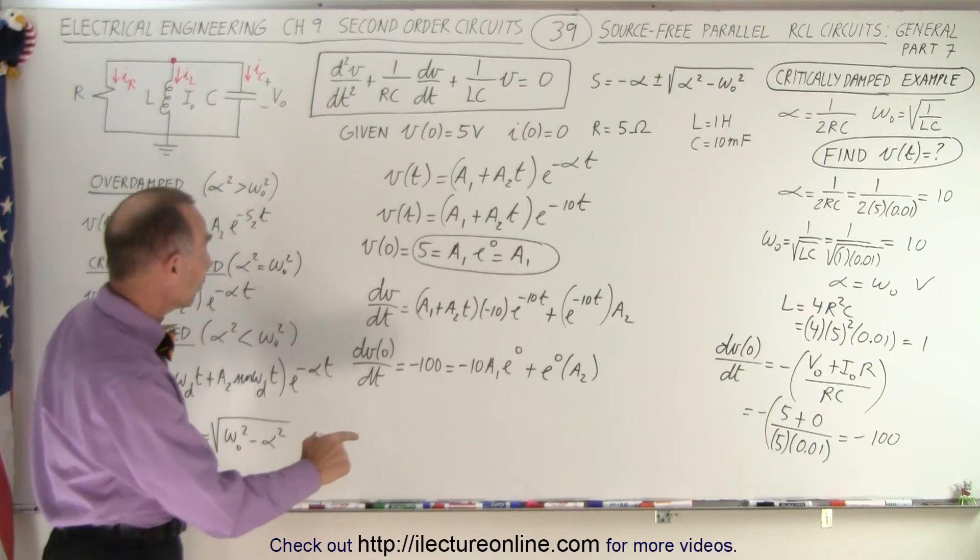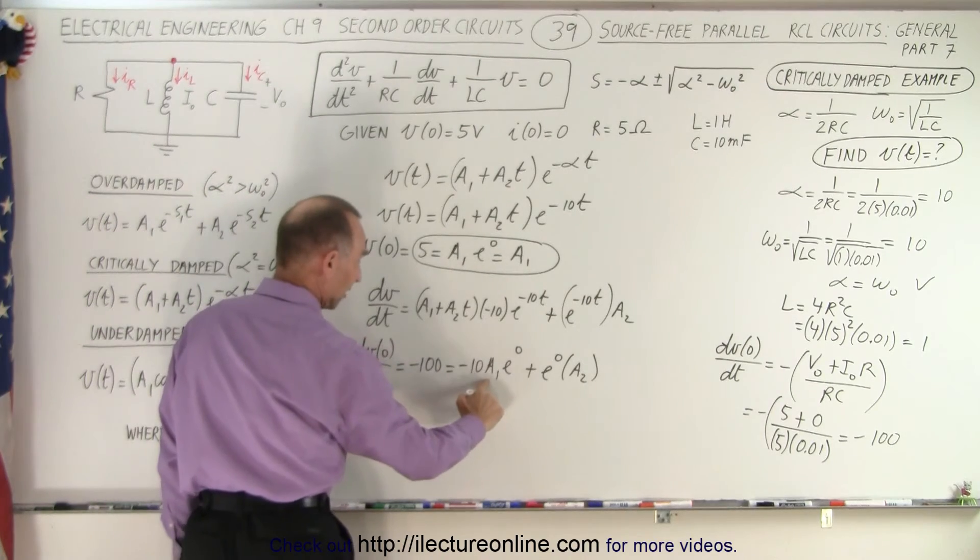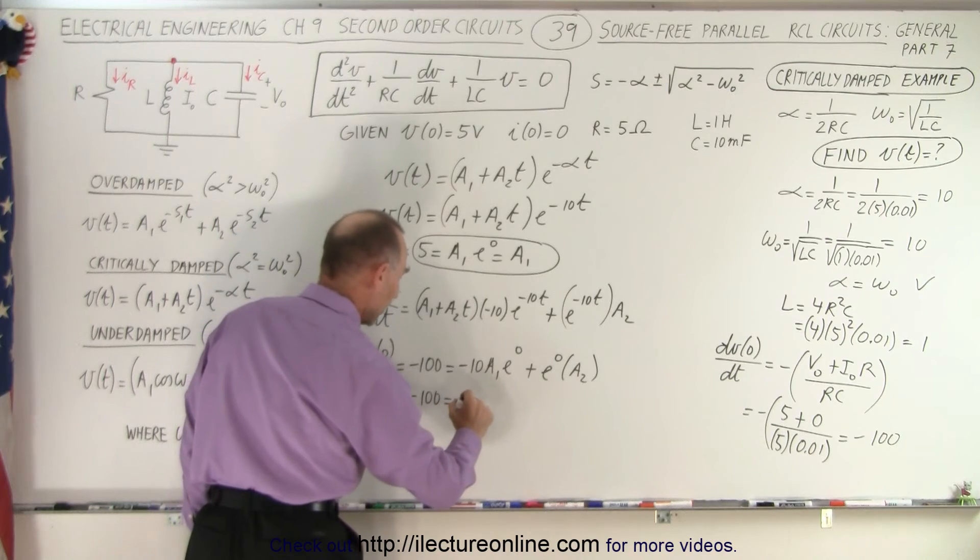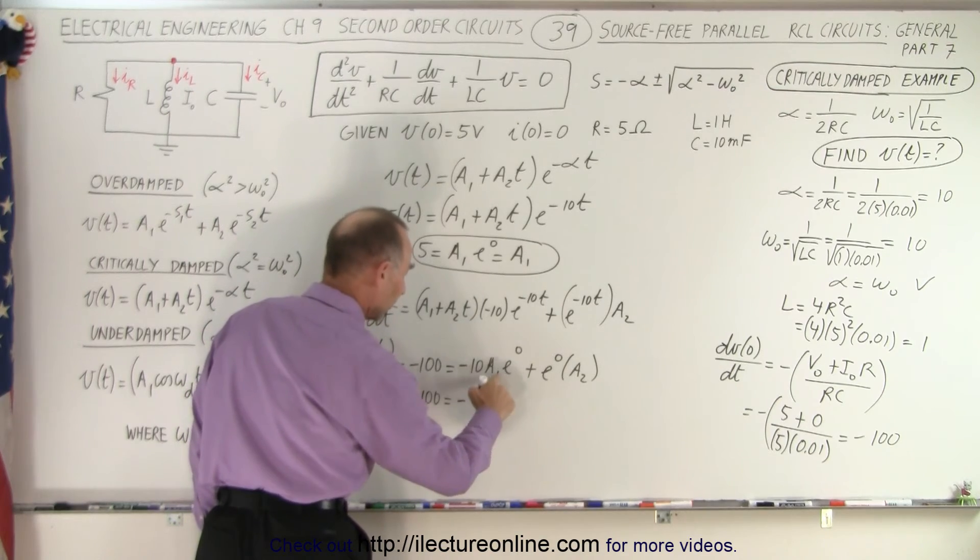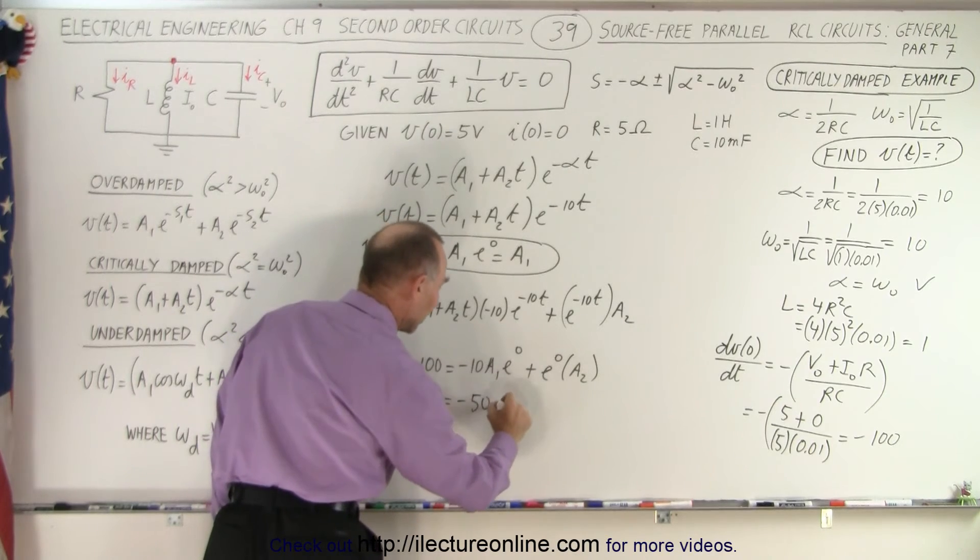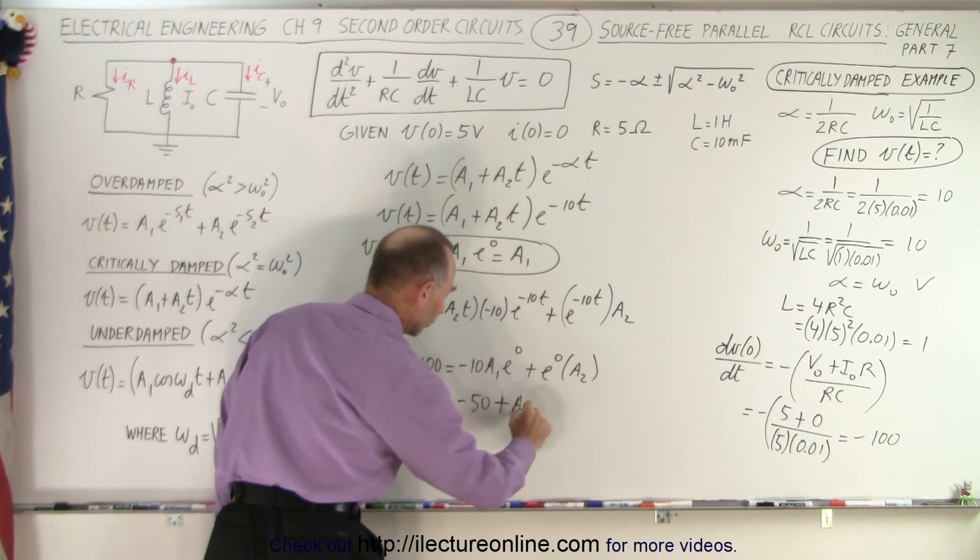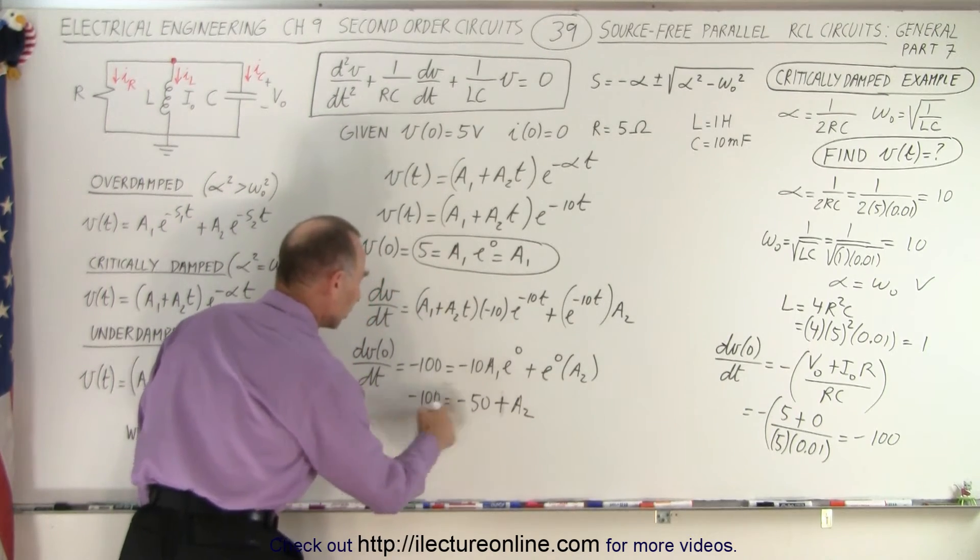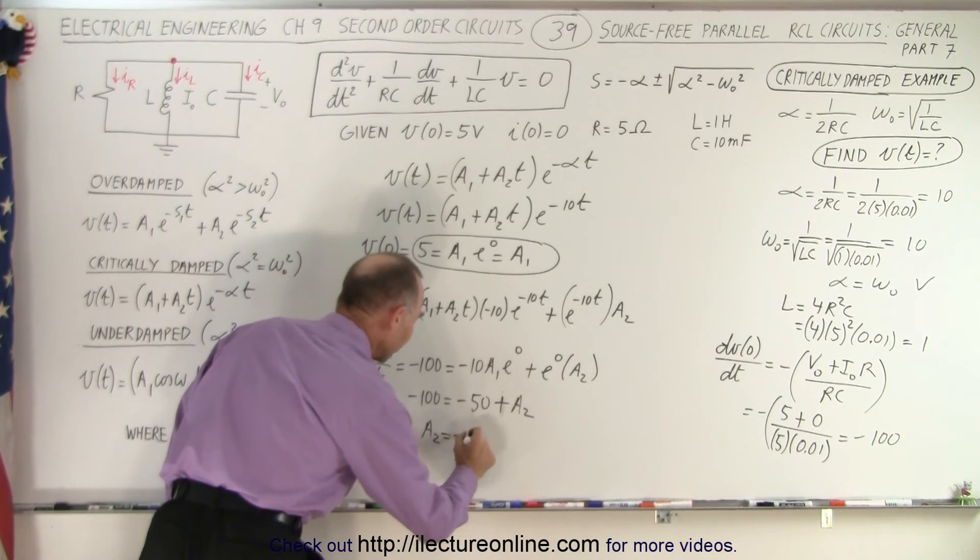We already know what A1 is, A1 is equal to 5 so we get minus 100 equals, let's see positive 5 times minus 10 which is minus 50 plus A2, not times but plus A2 which means that A2 is equal to minus 100 plus 50 which is equal to minus 50.